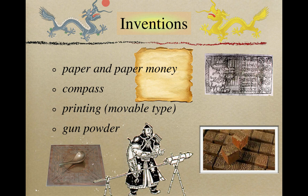Innovations in Chinese technology, made possible in part by the stable Song government, led to the invention of printing, which increased literacy and the availability of books, and created new products such as paper money and expensive art objects. These products, along with traditional Chinese goods such as tea, coal, porcelain, and especially silk, became very popular in Korea, Japan, Persia, the Arab world, and East Africa.